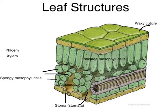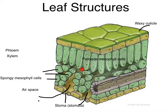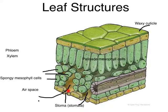That brings us to the air spaces. Air spaces are abundant and usually exist in between the spongy mesophyll cells — there are air pockets all over the place here. The air spaces allow gas exchange between the air space and the cells: carbon dioxide goes into the cells, oxygen goes out, and water vapor hangs out in here until it evaporates out.